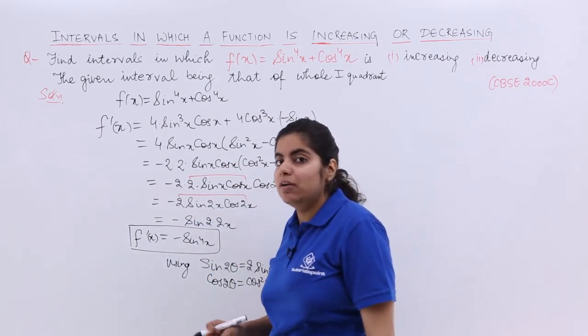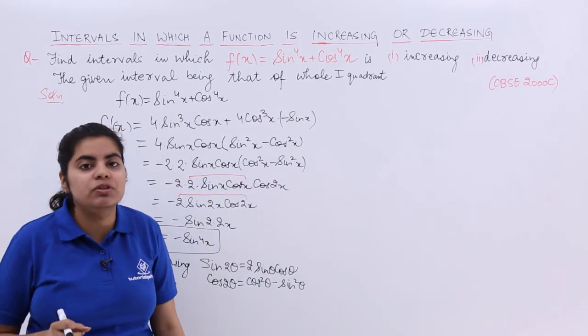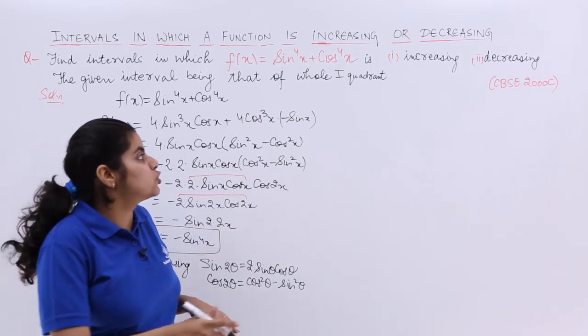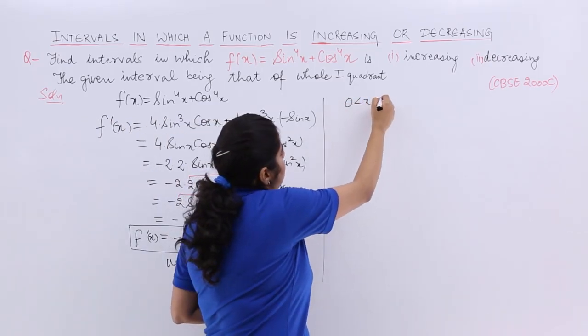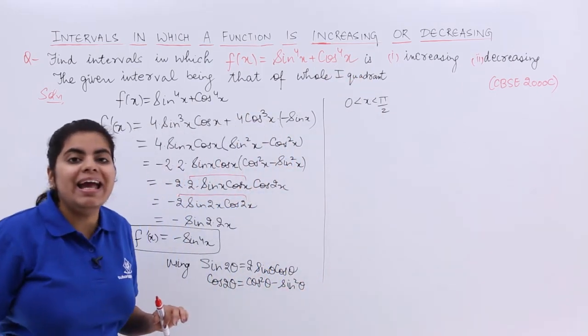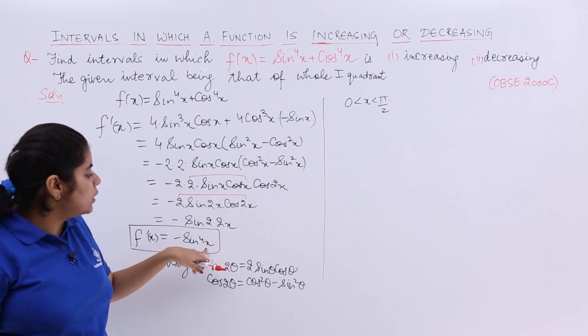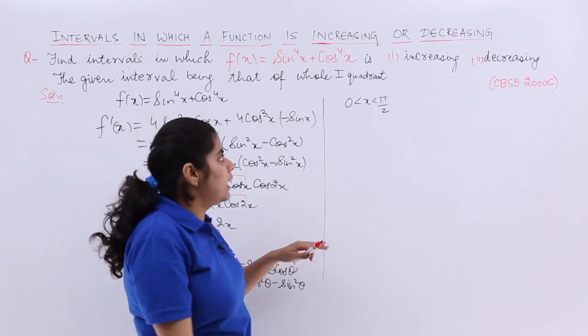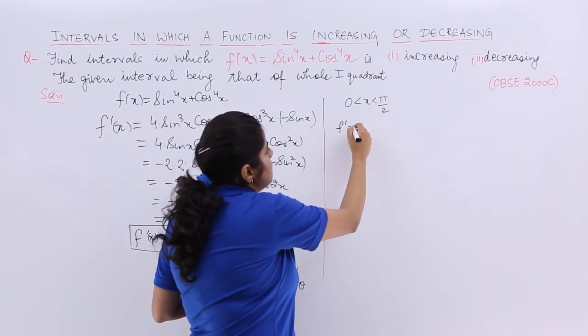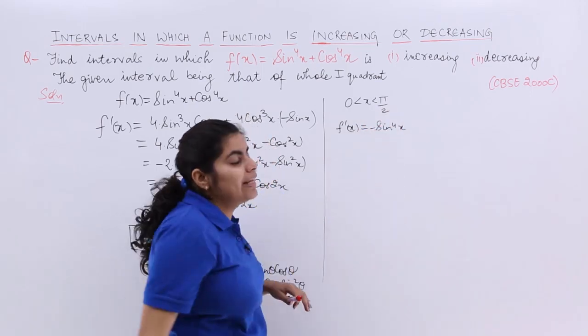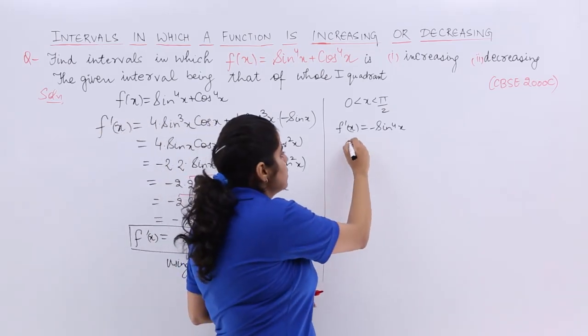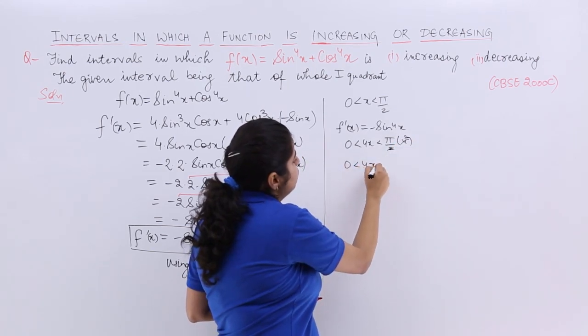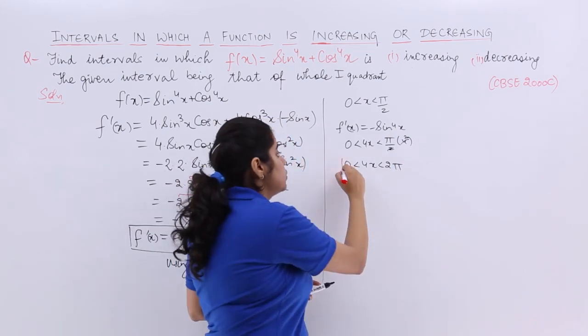Now you have to find the interval in which the function is increasing and decreasing. For increasing, I have to first see that x is lying between 0 to π/2. If my x lies between 0 to π/2, I'm going to talk about 4x this time. For 4x, things are going to change. Since f'(x) = -sin(4x), 4x is going to be 0 to 2π.